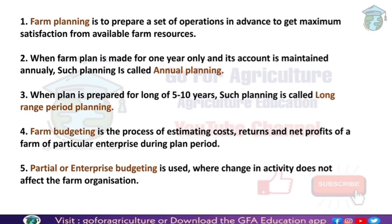Next, farm budgeting. Farm budgeting is the process of estimating cost, returns, and profits of a farm for a particular enterprise during a plan period. Before starting his business, the farmer will estimate the expenses, how much profit he will get at the end, and whether there will be any additional expenses. This is farm budgeting — it's like having an overview of the whole budget of the farm. Farm budgeting has two types: partial budgeting and complete budgeting.